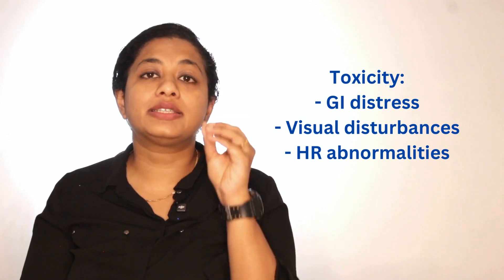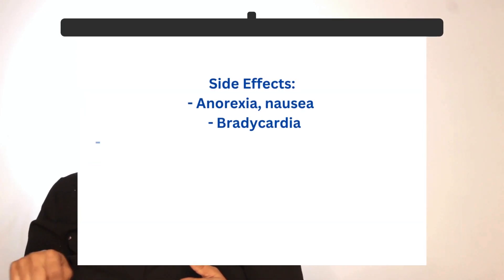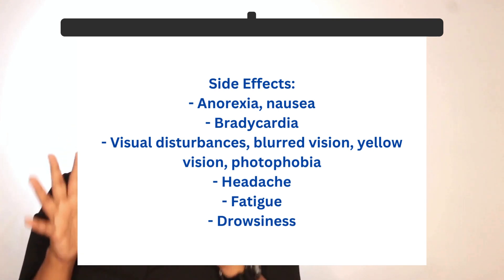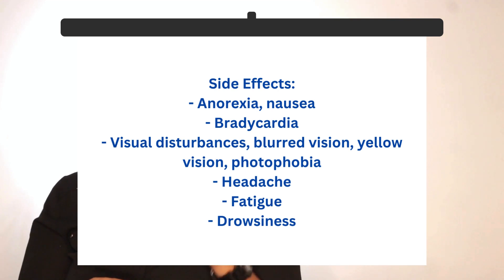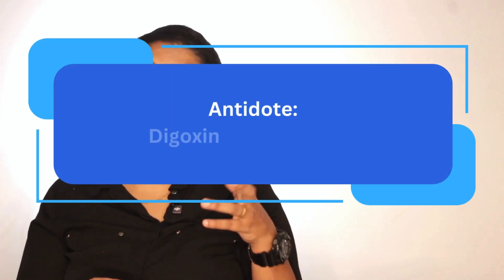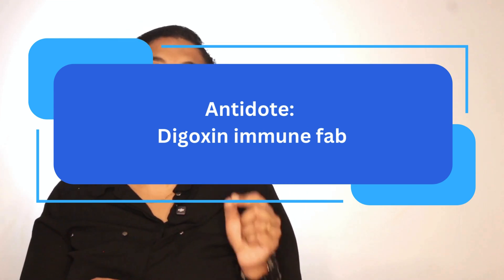You will notice your patient is going into bradycardia or the heart rate is decreasing. They would complain of visual disturbances including diplopia, blurred vision, yellow vision, or photophobia. They would also present with GI manifestations like nausea, vomiting, and diarrhea. These are the signs of digoxin toxicity. When you notice these, it is very important to notify the physician. In severe extreme cases of digoxin toxicity, digoxin immune Fab is available as an antidote.